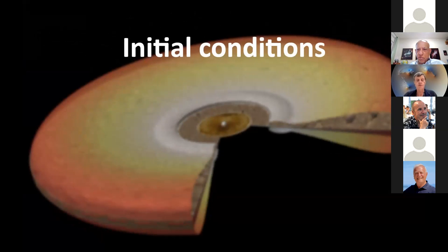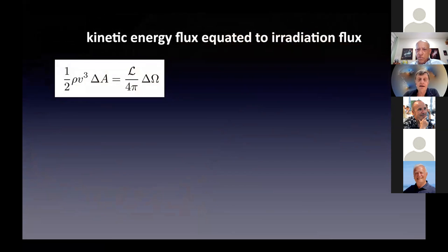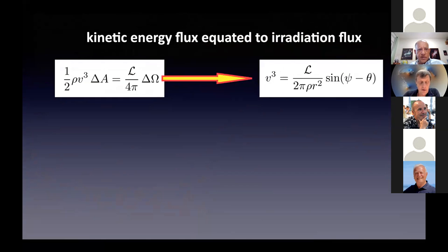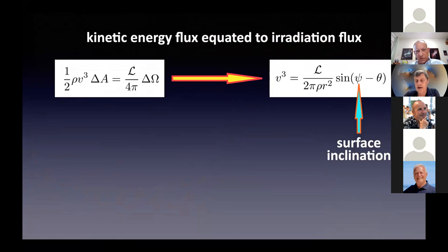So let us consider what the initial conditions would be in such a flow pattern. The kinetic energy flux is equated to the irradiation flux from the central star. That is totally straightforward, and the launching of the flow is very simple. It is perpendicular to the disk with a Mach number of order unity, and the outflow speed is then computed from the energy balance equation.